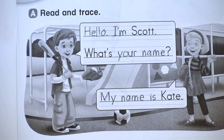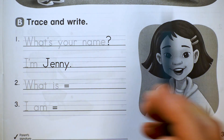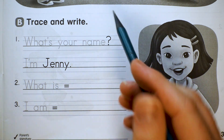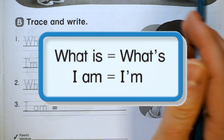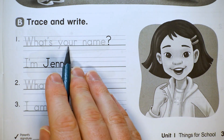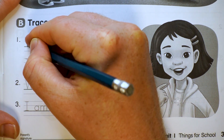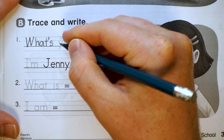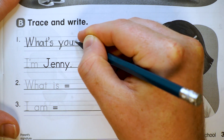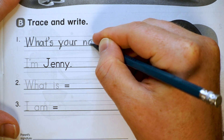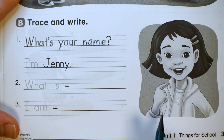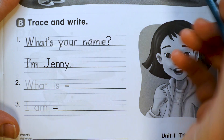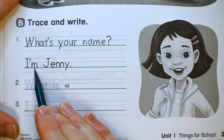Part A is done. This is Part B, and it also says trace and write. In our books, this part looked like this. Now let's trace it. What's your name? Big W-H-A-T apostrophe S space Y-O-U-R space N-A-M-E. And she says, I'm Jenny. Big I, apostrophe M. Remember that I'm means I am.